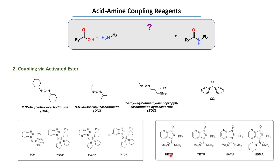We can also use HBTU, TBTU, and HDMA reagents for the amide coupling reaction. Well-known reagents available in the literature include DCC, EDC, CDI, HBTU, and HBOP, which are commonly used reagents for the coupling reaction.